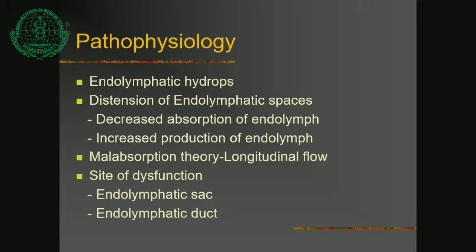Sympathetic overactivity in the body leads to vasospasm of the internal auditory artery, causing ischemia of the endolymphatic sac and hampering absorption of endolymph, further leading to endolymphatic hydrops. To summarize: the site of dysfunction is the endolymphatic sac — where defective absorption occurs — or the endolymphatic duct, where overproduction of endolymph occurs.